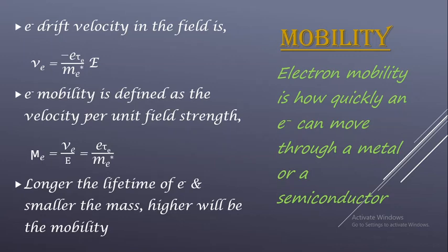Lifetime of electron and mobility are directly proportional, whereas mass is inversely proportional. So if we need greater mobility, the numerator should be greater and the denominator should be less — that is, longer lifetime τe and smaller effective mass me* will give greater mobility, meaning movement will be faster.